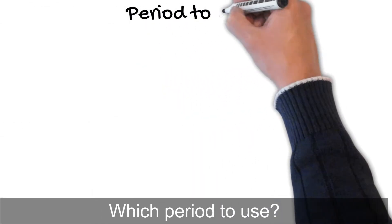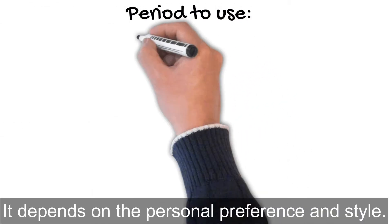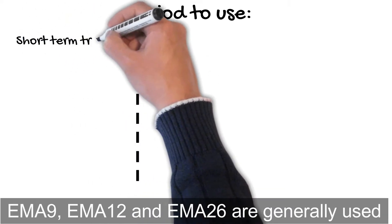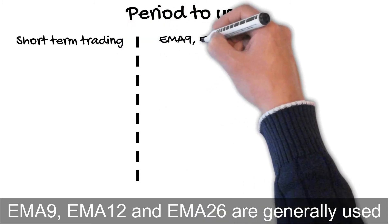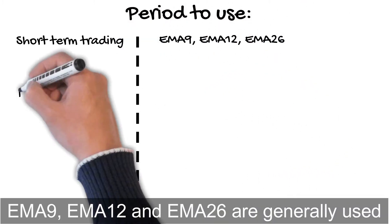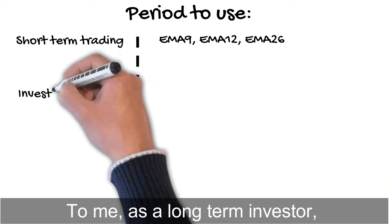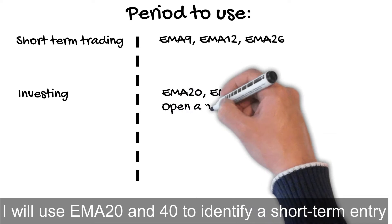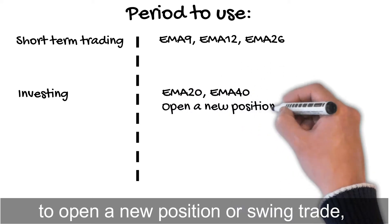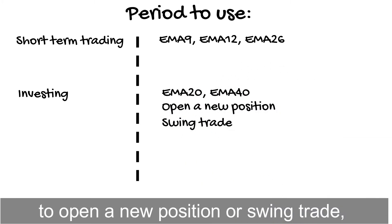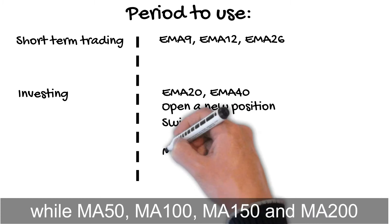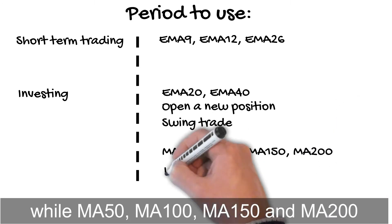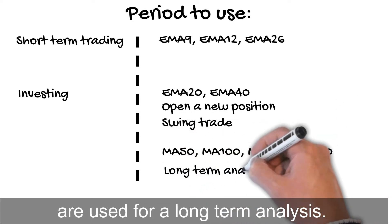Which period to use depends on personal preference and style. In general, for short-term trading, EMA 9, EMA 12, and EMA 26 are generally used. As a long-term investor, I will use EMA 20 and 40 to identify a short-term entry to open a new position or swing trade. MA50, MA100, MA150, and MA200 are used for long-term analysis.